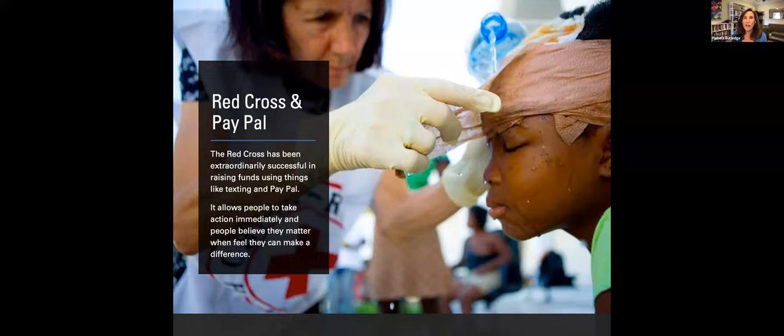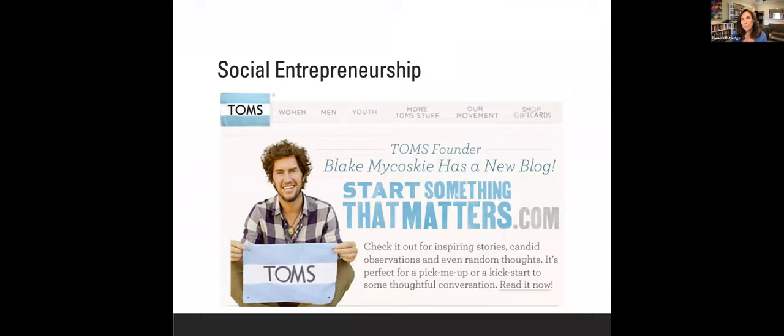PayPal enabled the Red Cross to raise $5 million within the first 24 hours after the Haitian earthquake. That was unprecedented. We also see people using technology not just to support their marketing, which was certainly true of Tom's shoes, but to change the way business was done, to create what's called social entrepreneurship, where they have a new business model. They give away one pair of shoes for every pair that is sold. So technology has enabled all these different kinds of ways of people creating things, getting after things.